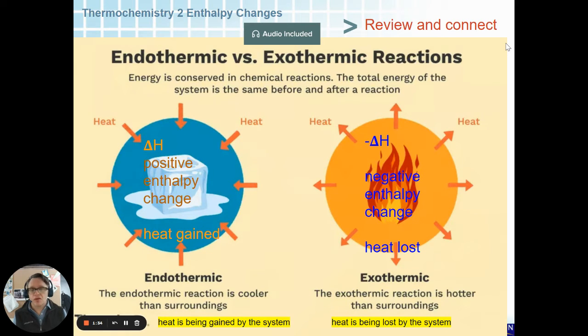Melting an ice cube would have a positive enthalpy change because heat is being absorbed by the ice in order for it to melt. In a fire, there's a negative enthalpy change because heat is being released to the outside rather than being taken in to the system.